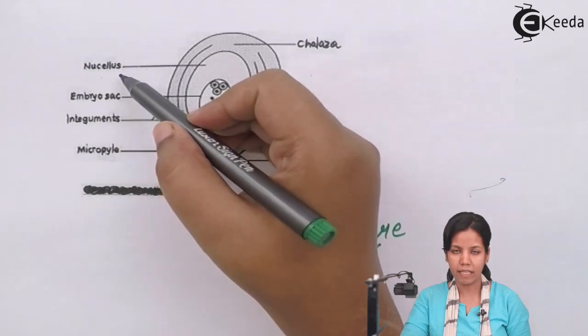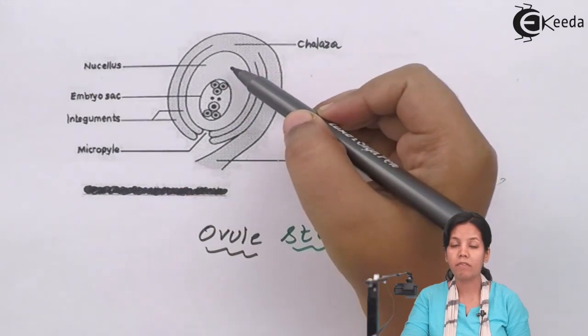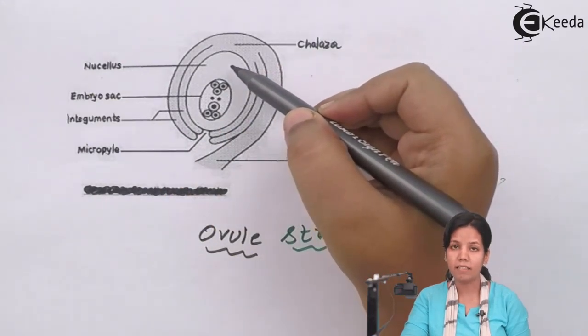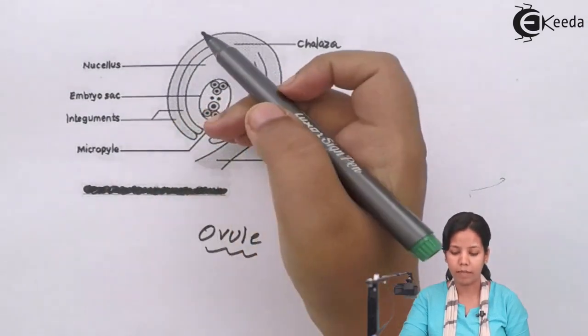Nucellus basically differentiates to form the embryo sac. Once the fertilization takes place, the next thing that has to form is the embryo sac for the protection of the egg, and nucellus forms that.